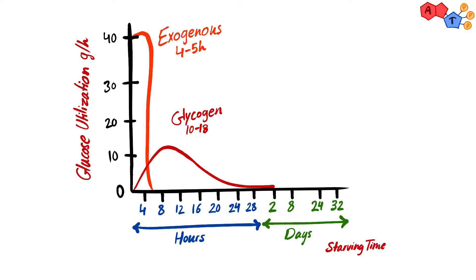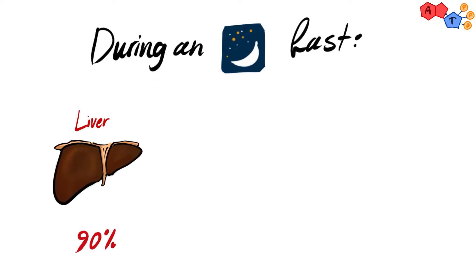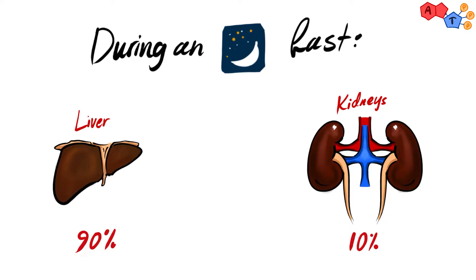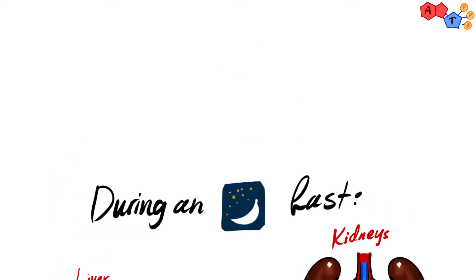Glycogen breakdown drops dramatically after the first 12 hours, during which gluconeogenesis increases. After around 24 to 48 hours, gluconeogenesis represents the only source of glucose. During an overnight fast, 90 percent of glucose production occurs in the liver while the remaining 10 percent occurs in the kidneys. However, during a prolonged fast, the kidneys become the major glucose-producing organs.